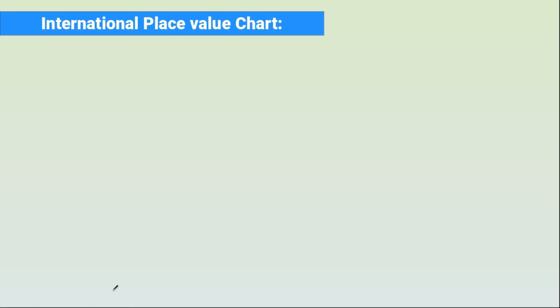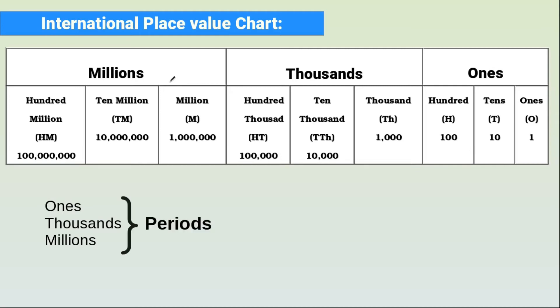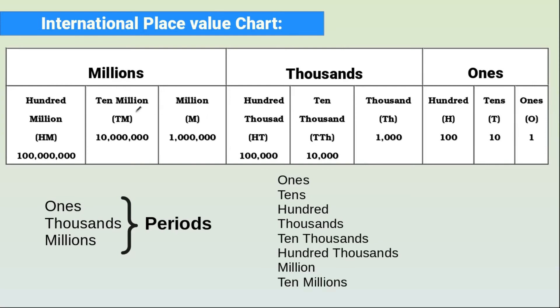Next we are going to see the international place value system. This is the international place value chart. The worldwide used number system is the international number system. We start grouping the numbers from the right side in groups of threes. The groups — ones, thousands, millions — are called periods. The places are: ones, tens, hundred, thousands, ten thousands, hundred thousand, million, ten million, hundred million.